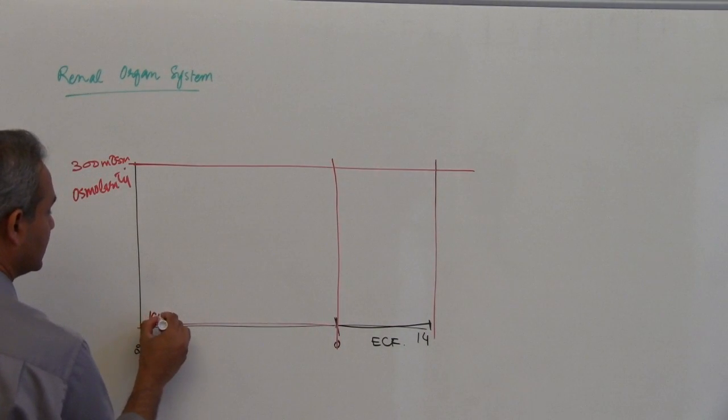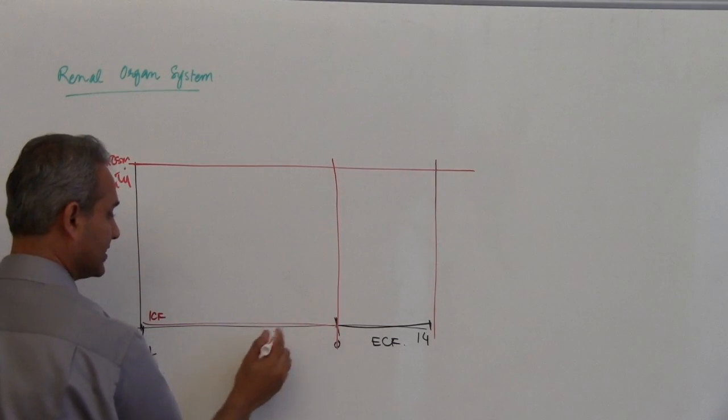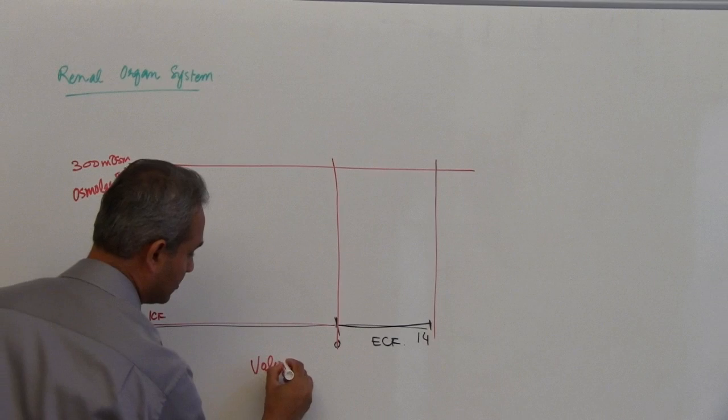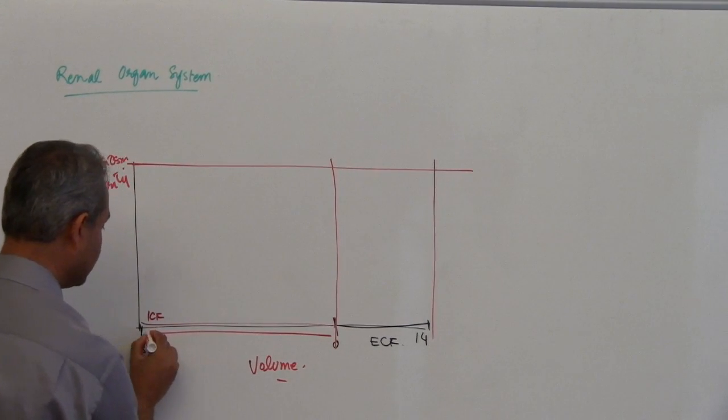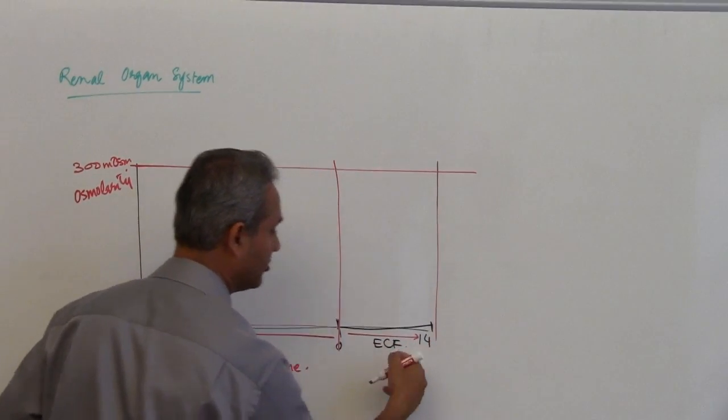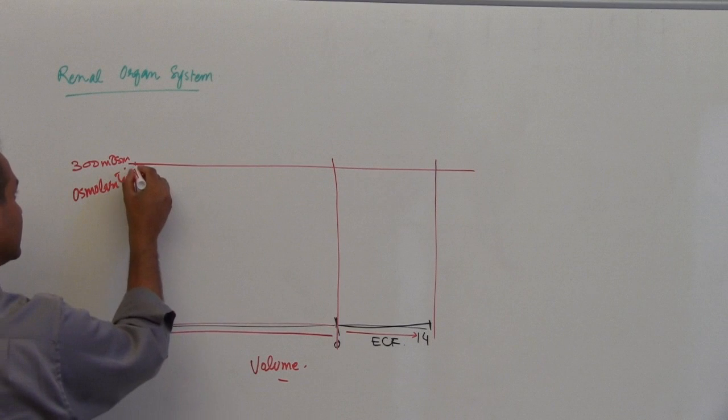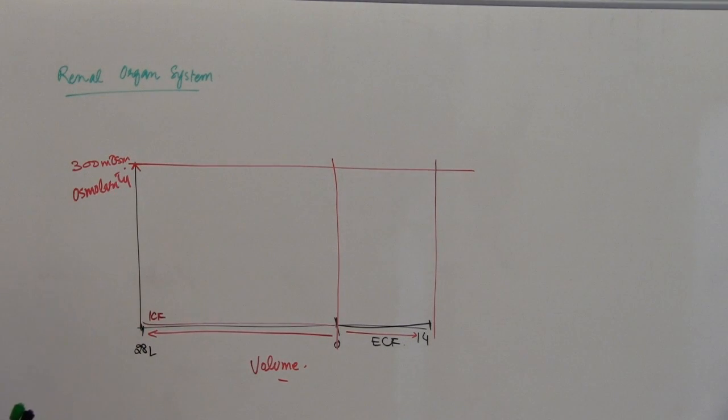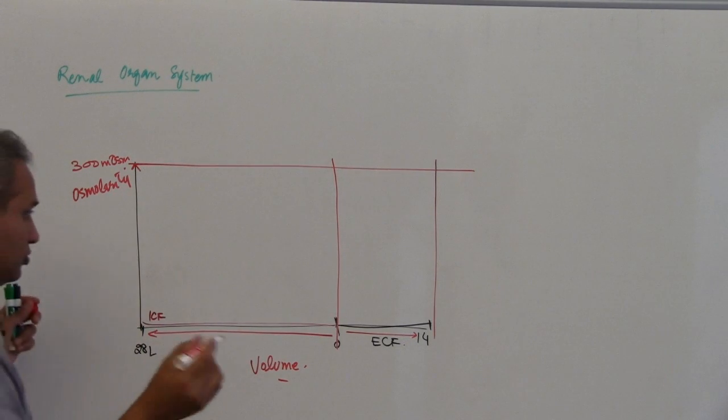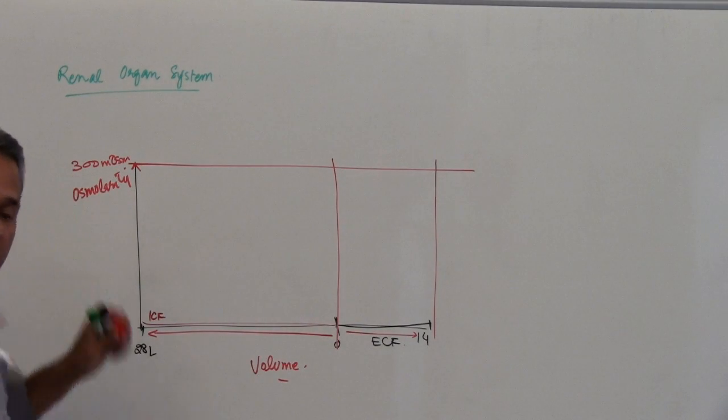So this will become intracellular fluid. This is volume, x-axis is volume, and from here to here is the volume of intracellular fluid. From here to here is the volume of extracellular fluid, and y-axis is the osmolarity.